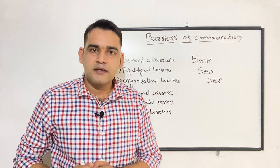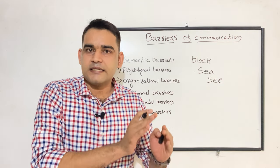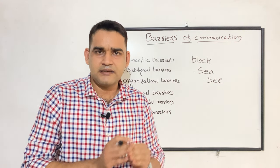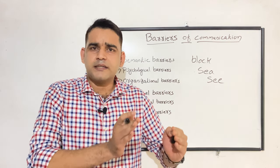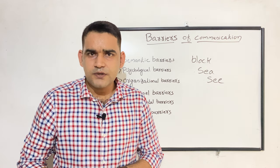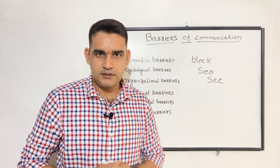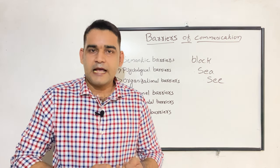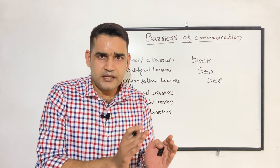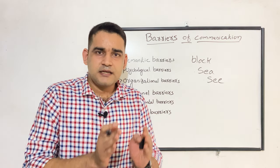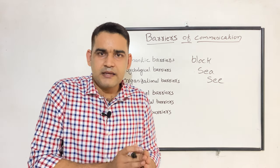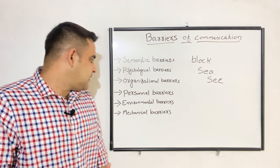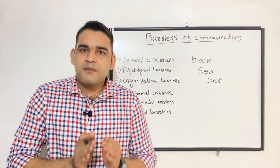That is the next barrier under organizational barrier — related to status. The college principal thinks: 'I am the principal and he is the student, so according to my status it is not appropriate for me to directly communicate with students.' So organizational barrier is related to the rules and regulations of the organization, the long chain of communication, and status differences where superiors feel they cannot communicate with lower-level persons.